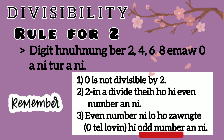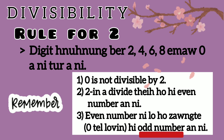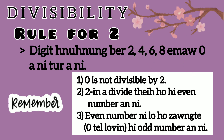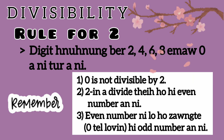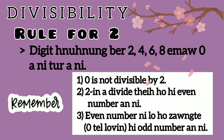Even number: 2, 4, 6, 8, 0. Even number 2, 4, 6, 8, 0. Divide 3. Even number — if the last digit is 2, 4, 6, 8, or 0, it is divisible by 2.